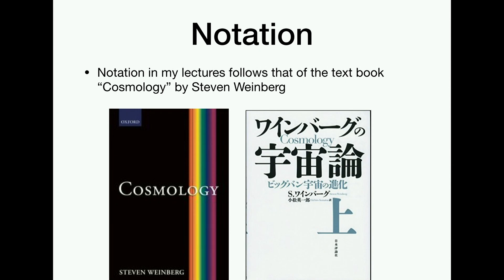For my lectures entirely, I'll follow the notation in the book Cosmology by Steven Weinberg. Before I moved to Munich, I was a professor at the University of Texas at Austin, and Steve was writing the book when I arrived, so we talked a lot about it and he converted me to his notation. Moreover, I translated this book into Japanese — when you translate English into Japanese, the volume doubles, so there are two volumes. I'm very proud of that.